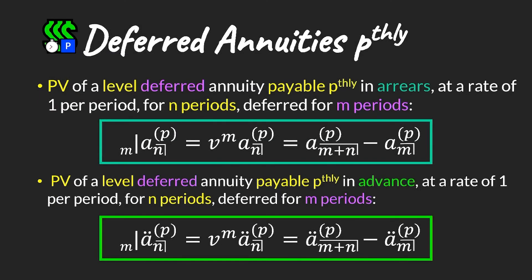In a similar way, without repeating the calculations, we can show the following formulae hold for pthly annuities — annuities paid p times per annum for n periods, deferred for m periods, where payments can be made in arrears or in advance — giving relationships similar to what we've already seen.